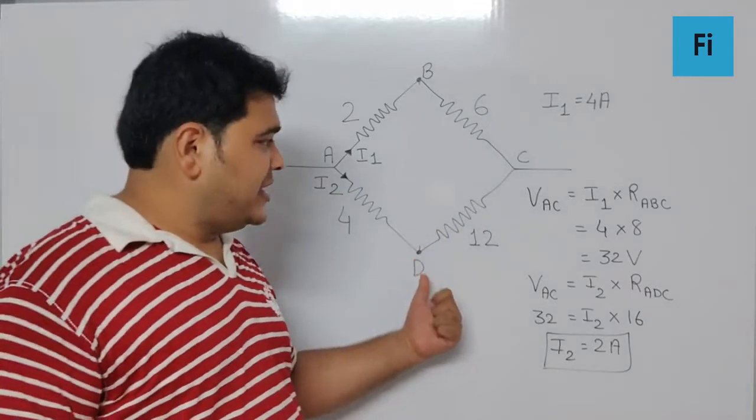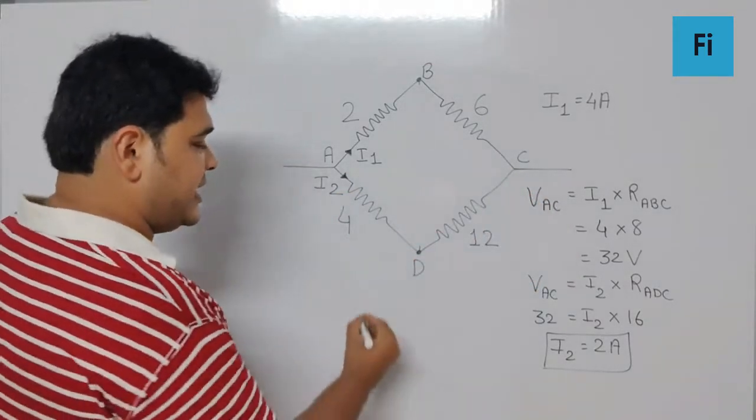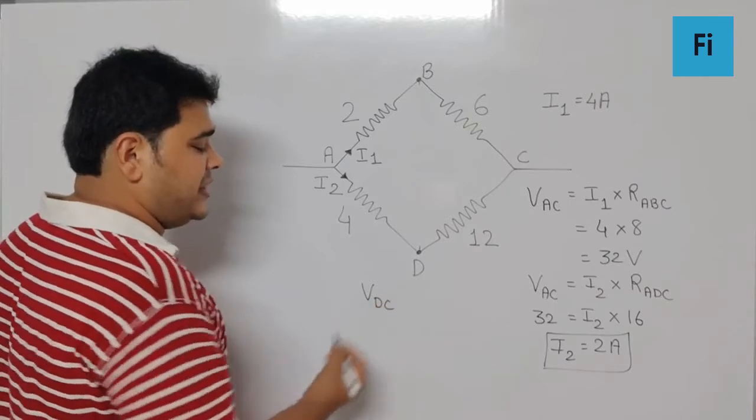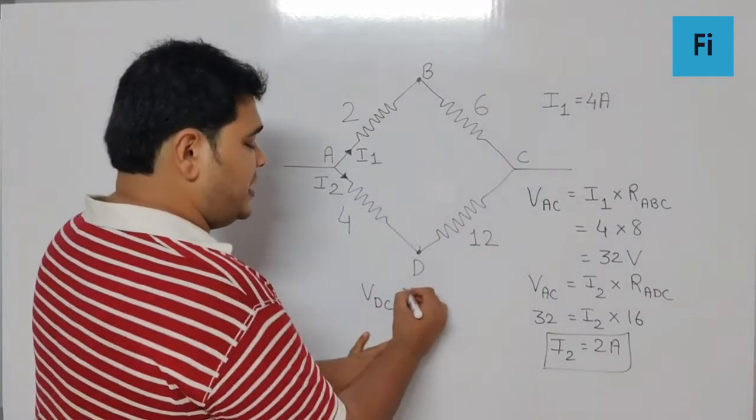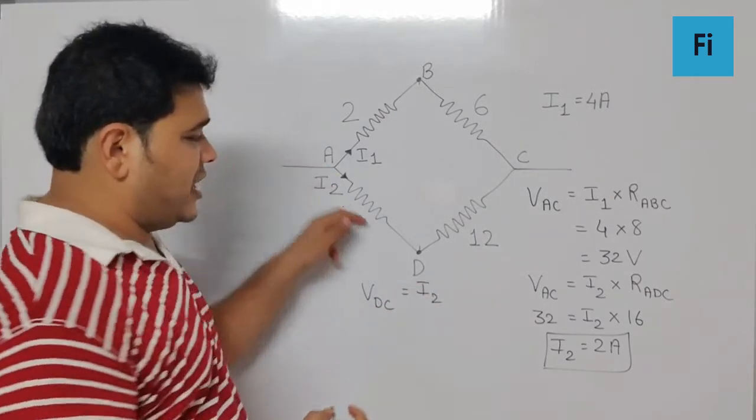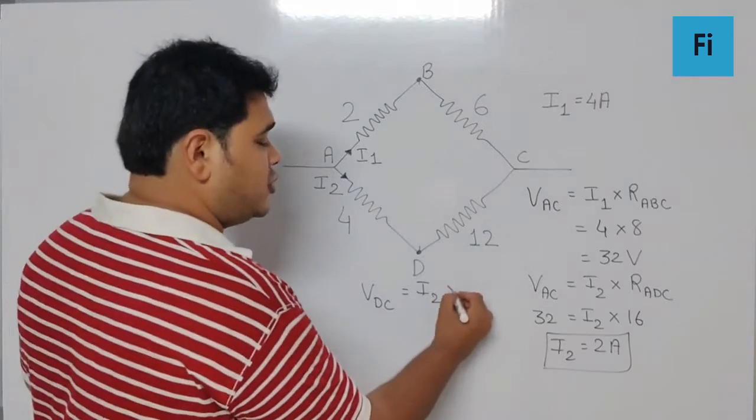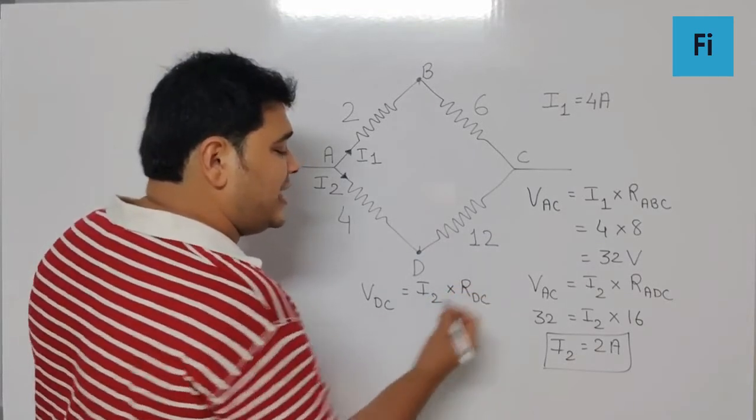find the potential difference between D and C. So can I say the potential difference between D and C is going to be equal to I2, the same current flowing through it, into the resistance between only D and C.